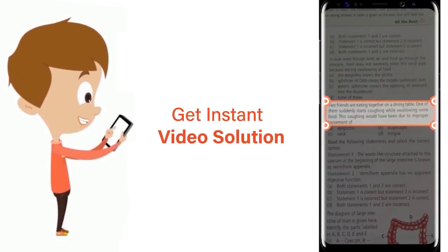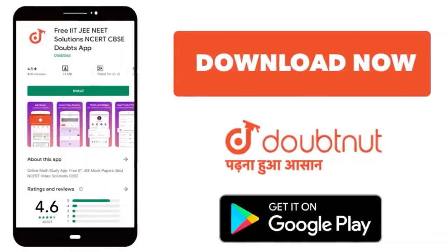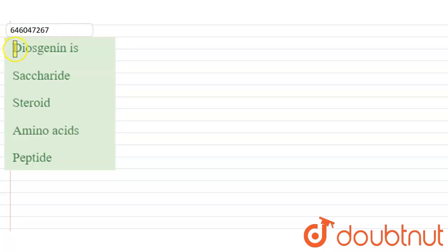Download Doubtnet app today. Hi, the question is: diogenin is... The options are saccharide, steroid, amino acids, and peptide. So the question is asking what diogenin is in the given options.